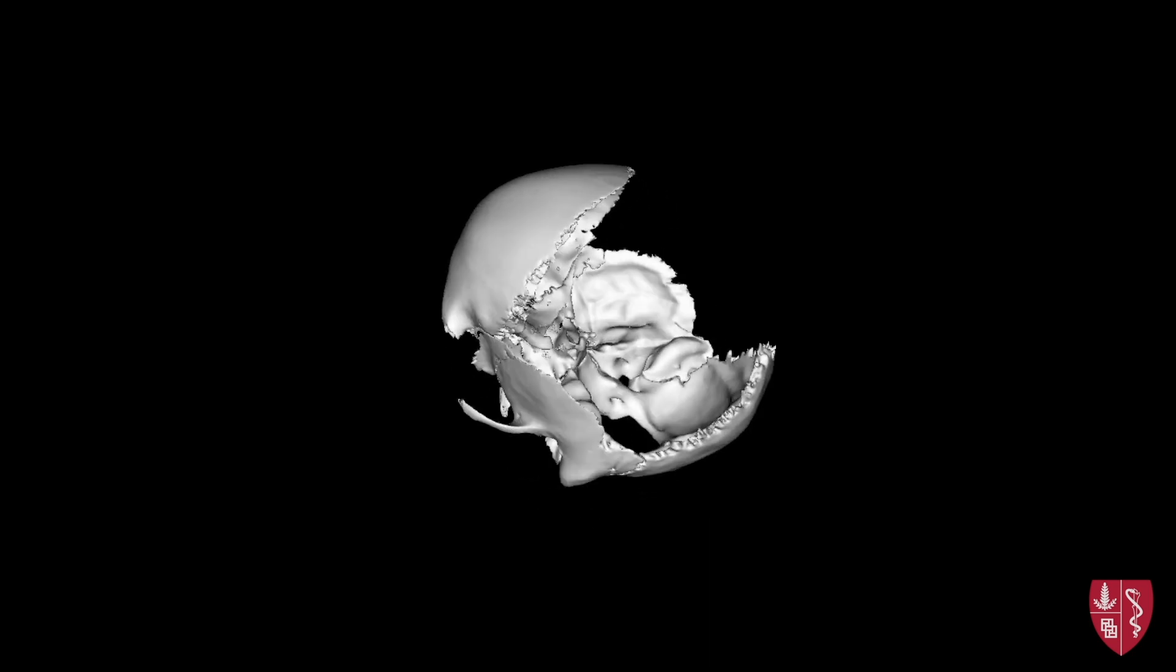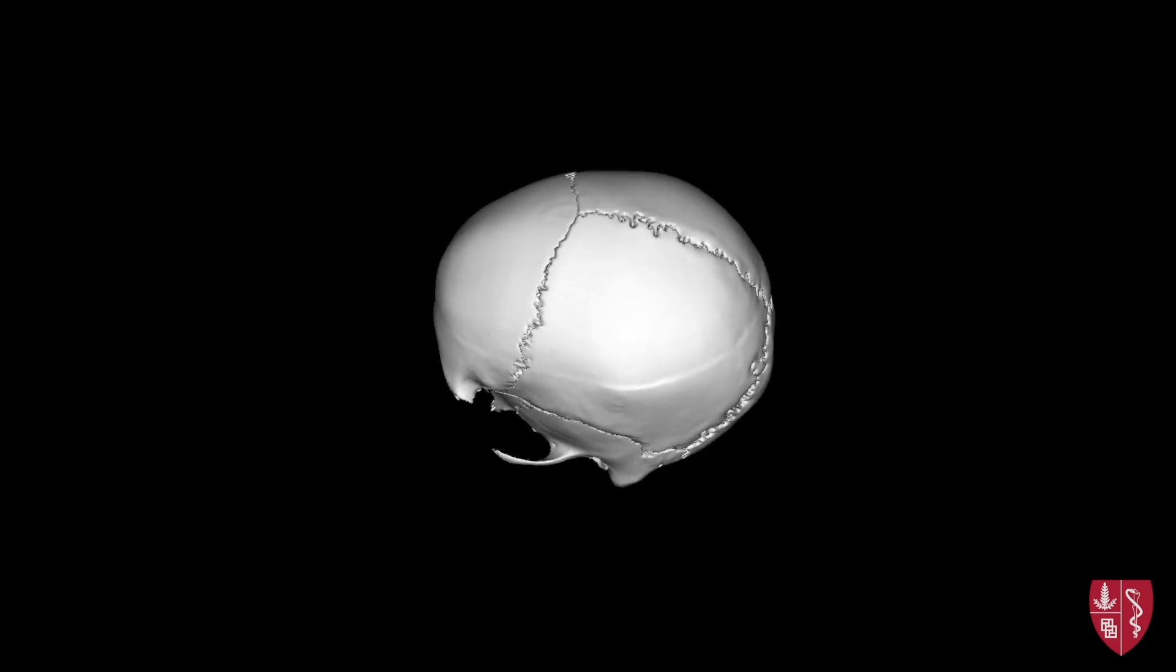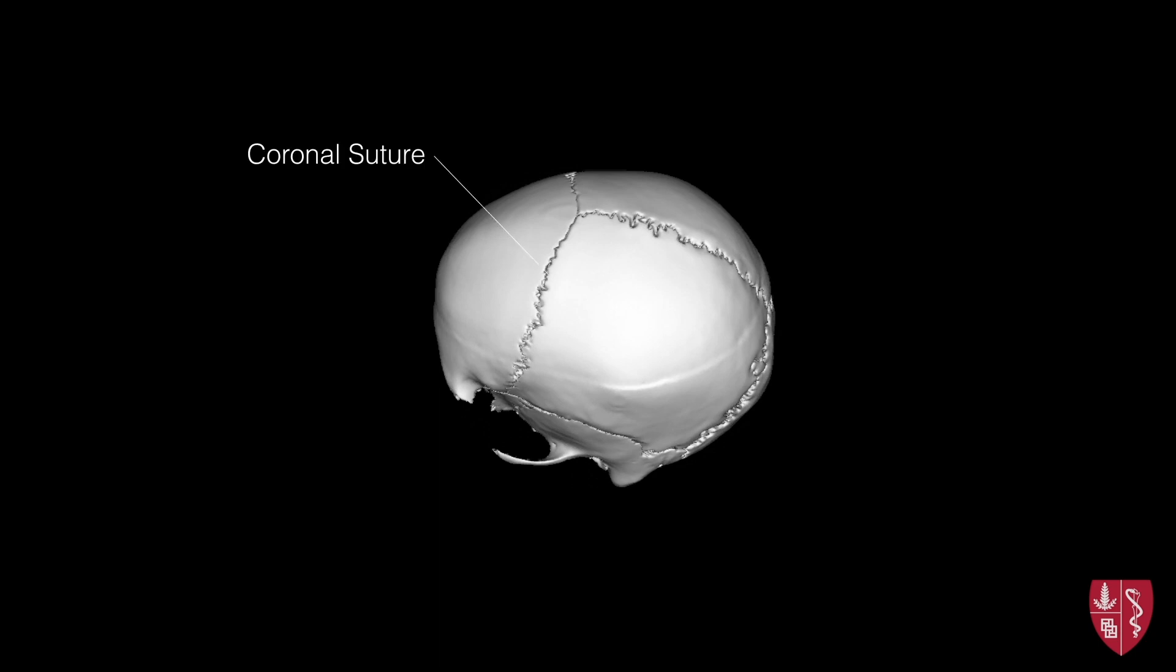During development, when the bones of the skull meet, they form specialized fibrous joints known as sutures. Where the frontal and parietal bones meet, we can see the coronal suture.